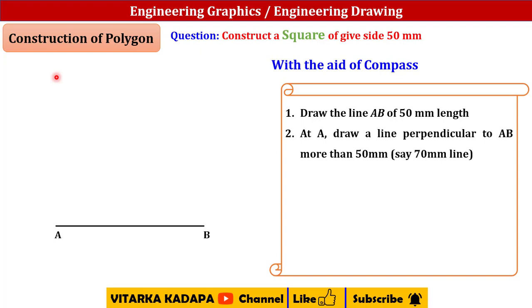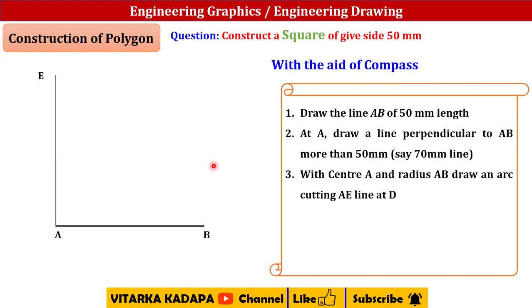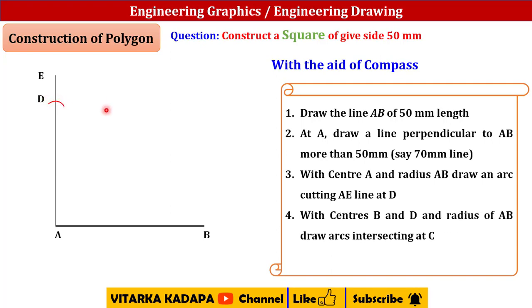The perpendicular line at A is drawn and termed as AE. With center A and radius equal to AB (50 mm), cut an arc on line AE and mark that point as D. Then, with the sharp edge at A and radius AB, cut the AE line at that point.